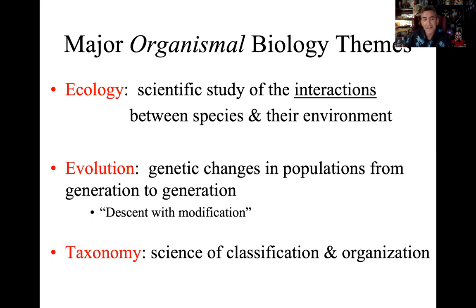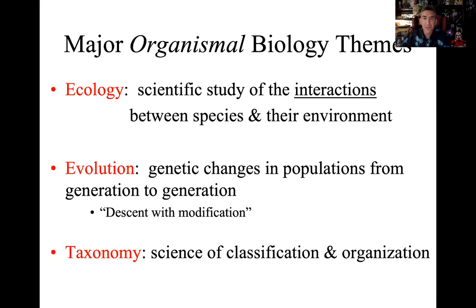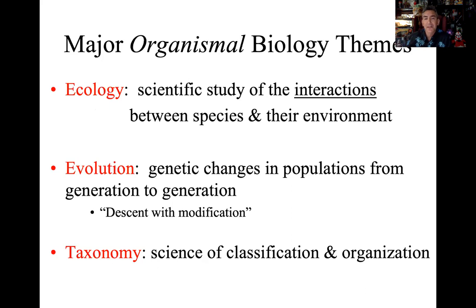Once a mutation or selective pressure happens, what impact does it have on the ecology of the organism? Taxonomy is basically the science of classification — what makes an amphibian an amphibian and a mammal a mammal, what characteristics allow us to categorize different genres of life. So: taxonomy is the categories, evolution is the change, and ecology is the interactions — themes we'll carry all the way through the semester.